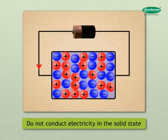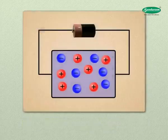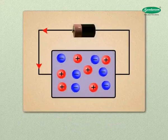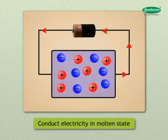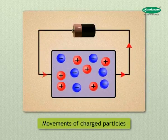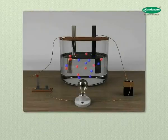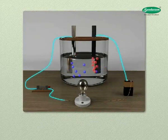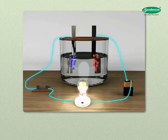Ionic compounds in the solid state do not conduct electricity because the movement of ions is not possible due to their rigid structure. But they conduct electricity in the molten state. The conduction of electricity through a solution involves movement of charged particles — a solution of an ionic compound in water contains ions which move to the opposite electrodes when electricity is passed.